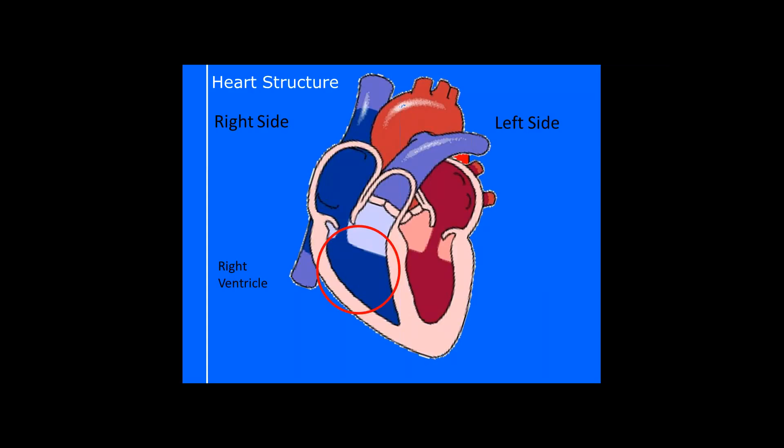Then it drops down into the ventricle, and they're the big strong ones. Look at all this muscle all the way around the outside. These are the big strong ones that push it out into the arteries so that we can move around the body.